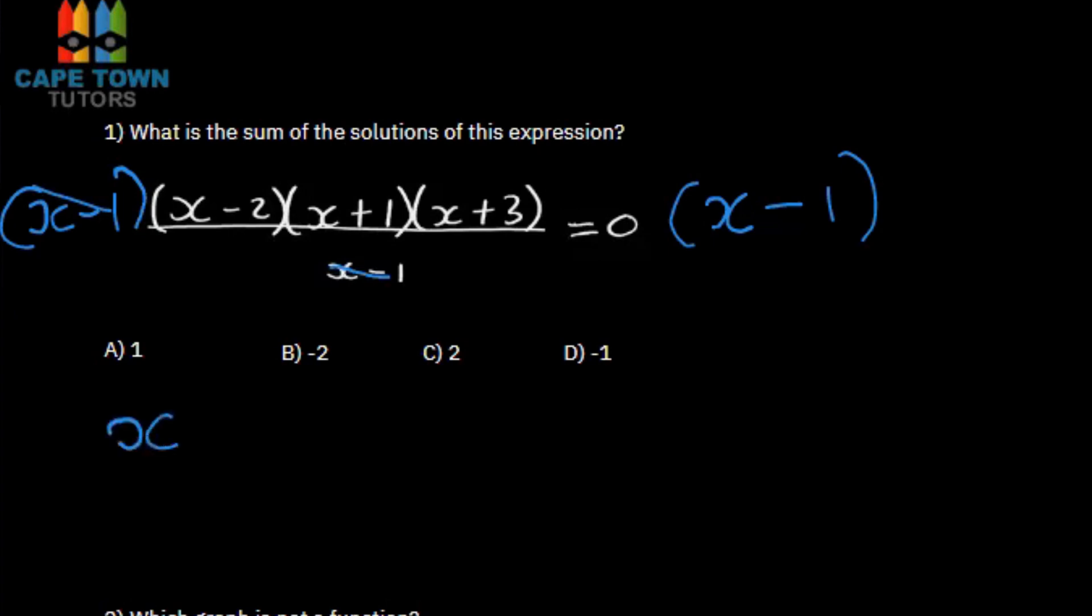After canceling that, we'd have x minus 2 multiplied by x plus 1, multiplied by x plus 3, and that would equal 0 times x minus 1, which would just be 0, because anything multiplied by 0 is 0.